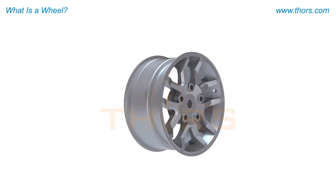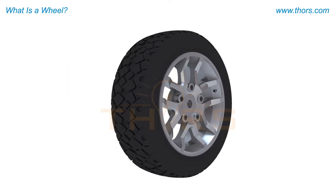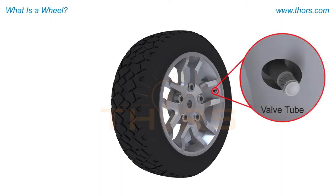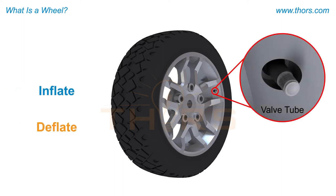The main parts of a wheel include a rim and a disc. A rim is the outermost profiled section of a wheel that holds the tire in its position. The rim also has a provision for valve tubes, which are used to inflate and deflate the tires.